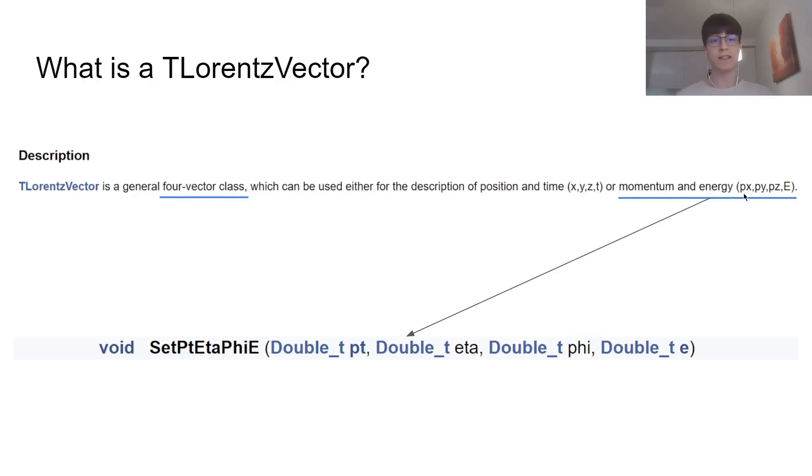So, the momentum in the x-axis and the y-axis, z-axis, and the energy of the particle. Since we are interested in both the four-momentum and orientation of those vectors, we're going to use the method SetPtEtaPhiE to declare the transverse momentum of the particle, the two important angles for their orientation, and its energy.